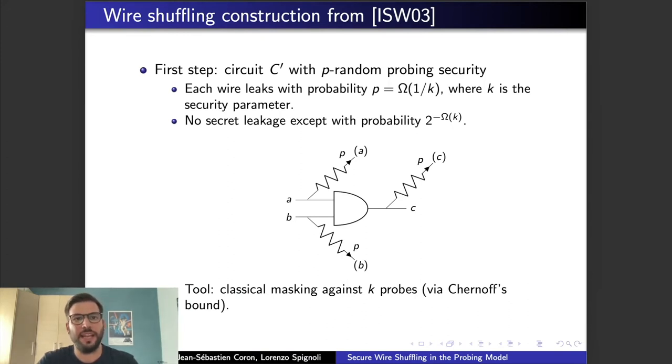So, let's present the construction for the statistical privacy. As I mentioned, the transformer will work in two steps. The first one will consider a new security definition, the average case model, or formally, the random probing secure, where now the adversary cannot choose which wires he wants to probe. Rather, each wire of the circuit will leak independently with some probability p. They show that applying the classical masking against k probes, where k is the security parameter, and choosing p equal to Omega of 1 over k, then such circuit C' is indeed p random secure. And the proof for that relies on the Chernoff bound.